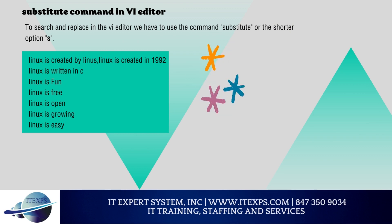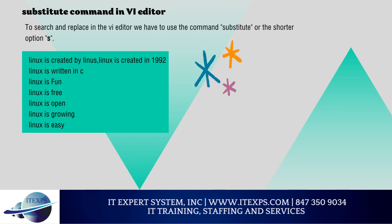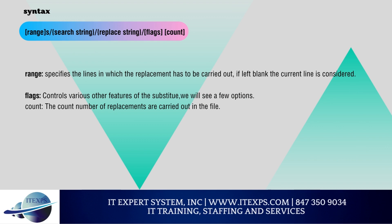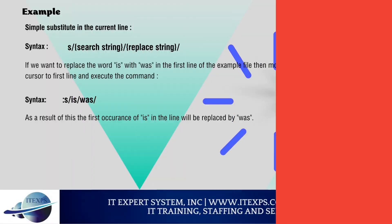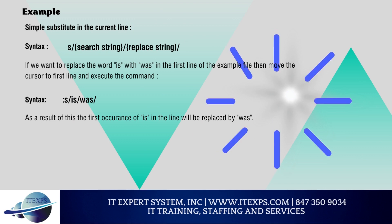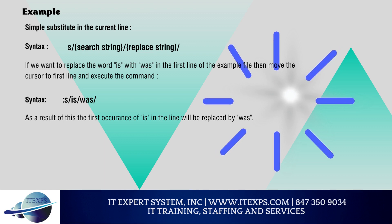Substitute command in VI editor: To search and replace, use the substitute command or shorter option S. All substitute commands must be run in command mode. The syntax is: range, search string, replacement string, and flags. Range specifies the lines where the replacement occurs; if left blank the current line is used. Flags control features of the substitute command. Count specifies the number of replacements. For a simple substitute on the current line — replacing only one occurrence — use: :s/is/was/ which replaces the first occurrence of 'is' with 'was'.